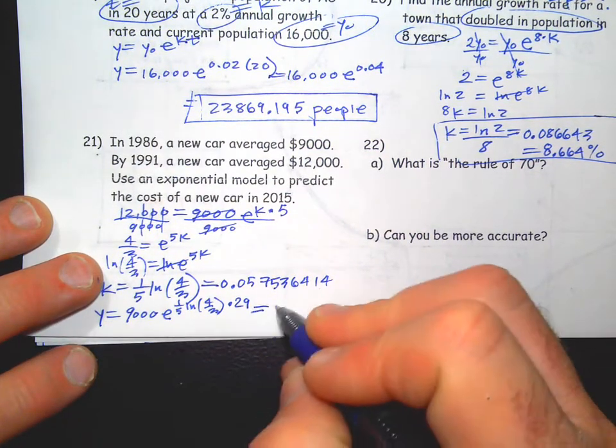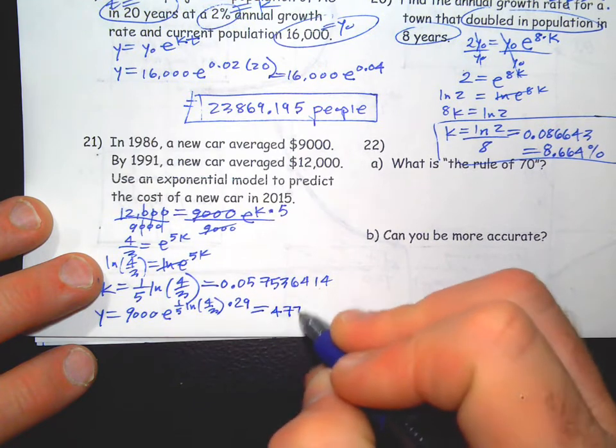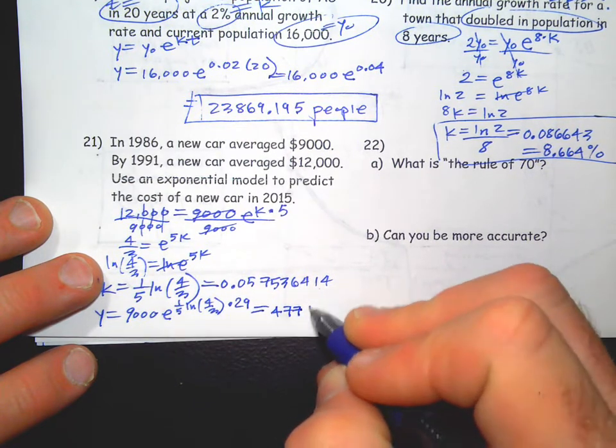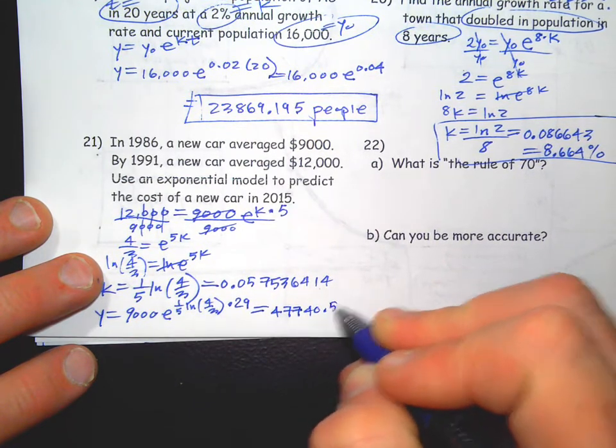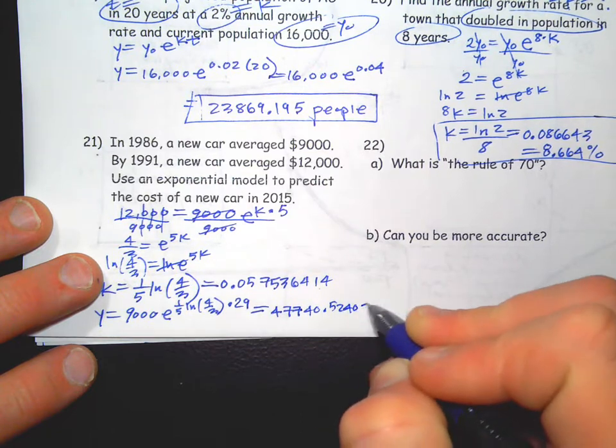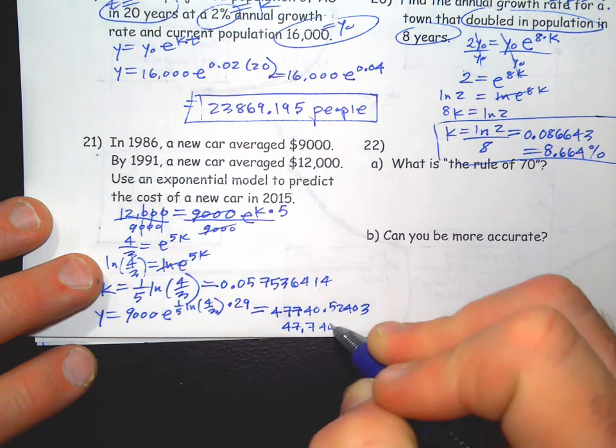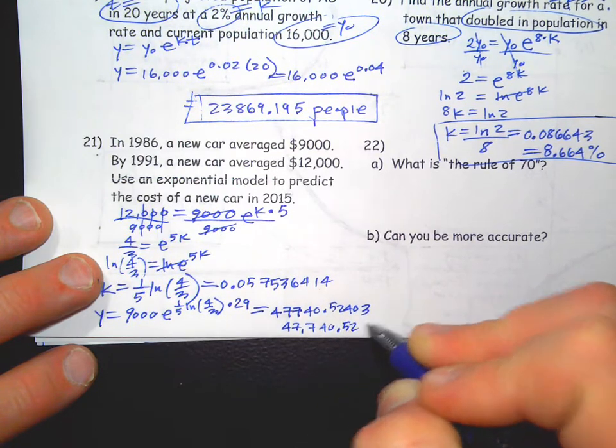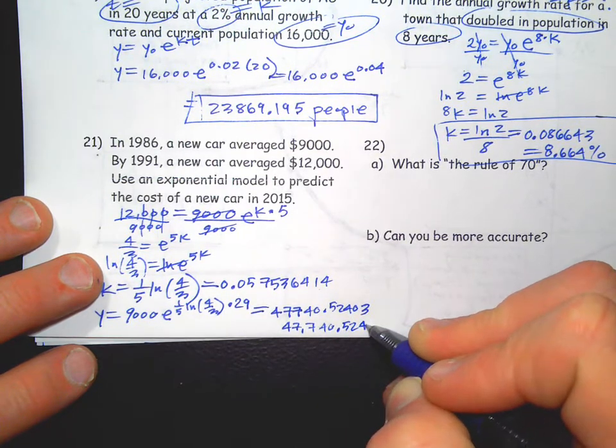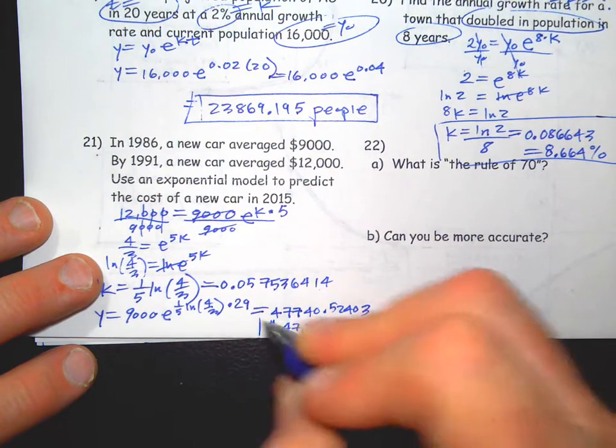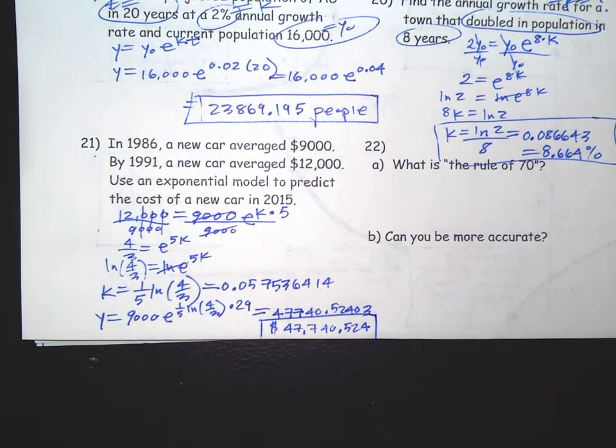But you get $47,740.52403, so $47,740.524 would be the units, right? Three decimal accuracy.